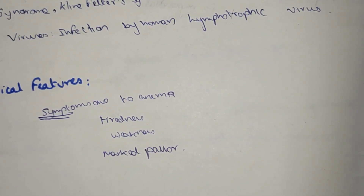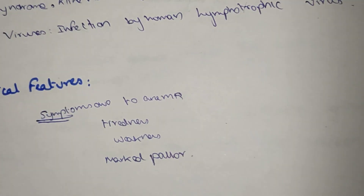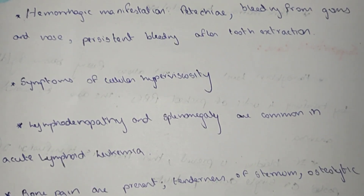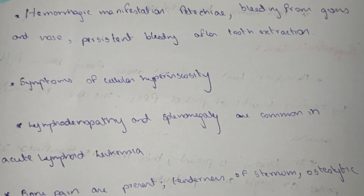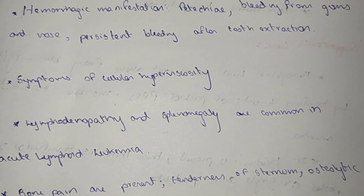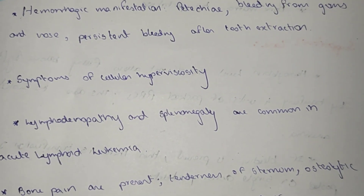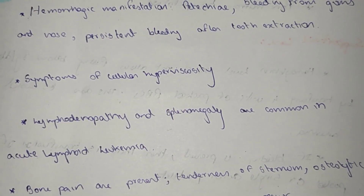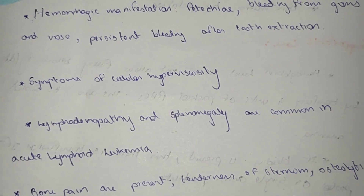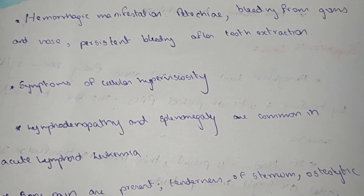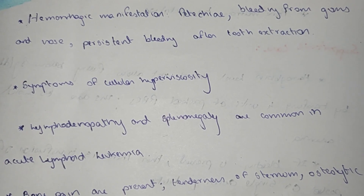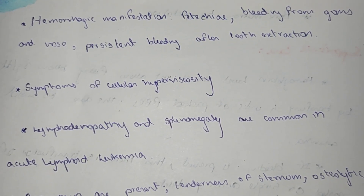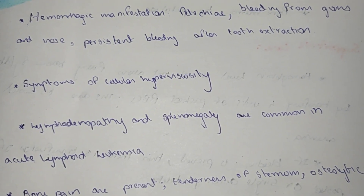The clinical features and symptoms of acute leukemia include anemia, tiredness, weakness, and marked pallor. Hemorrhagic manifestations include petechiae — dark spots present under the skin — bleeding from the gums and nose, and persistent bleeding after tooth extraction.